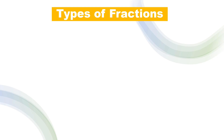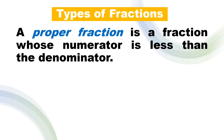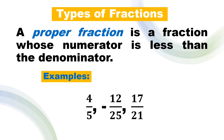Now let us have the types of fractions. The first one is the proper fraction. A proper fraction is a fraction whose numerator is less than the denominator — meaning, the numerator is less than the denominator, or a less than b. Examples: we have 4 over 5, where 4 is the numerator and 5 is the denominator — the numerator is on top of the fraction bar and the denominator is on the bottom. Also negative 12 over 25 and positive 17 over 21.